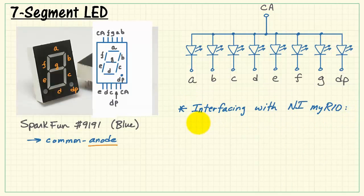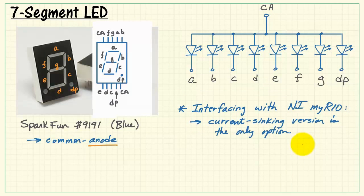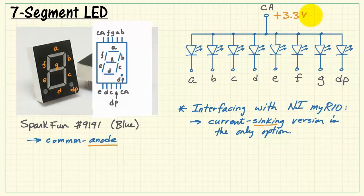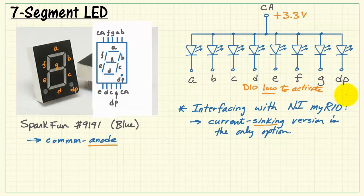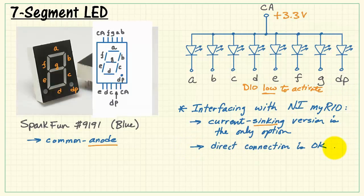Let's take a look at how you can interface this device to the NI MyRio. The current sinking version for LEDs is the only option for this device. That's because all of the anodes are wired together, and each anode needs to be connected to the 3.3 volt supply. Now as we consider the state of the digital output, we need it to be low in order to activate the device. That applies a voltage across the diode and current flows.